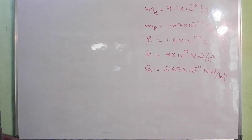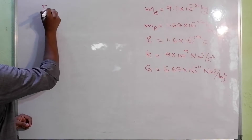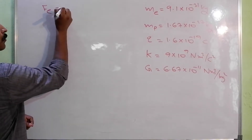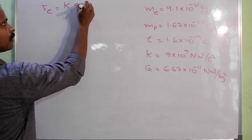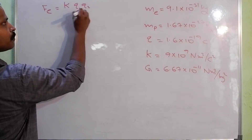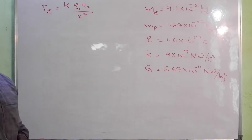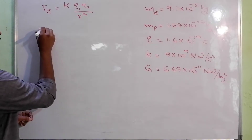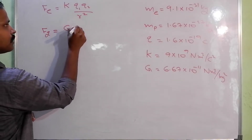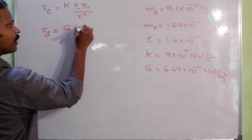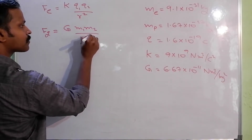These are our values. Now, the electrostatic force equation is K into Q1, Q2 by r square. Next, we need the gravitational force equation: F_G is equal to G into M1, M2 by r square.